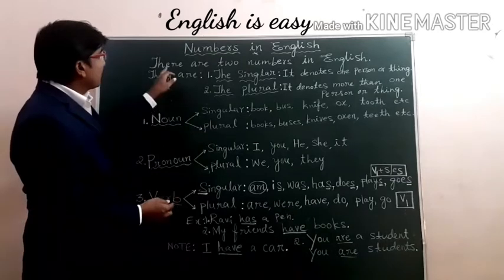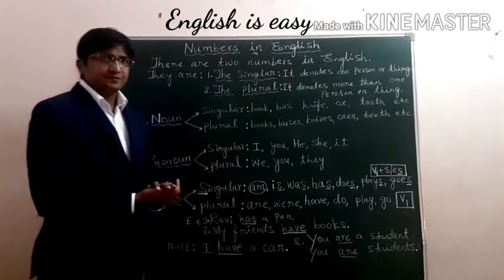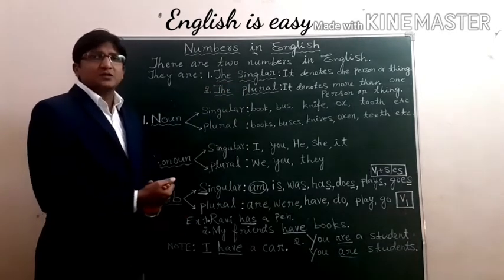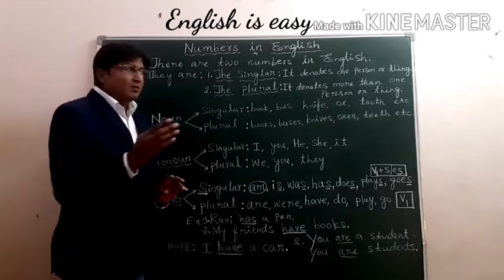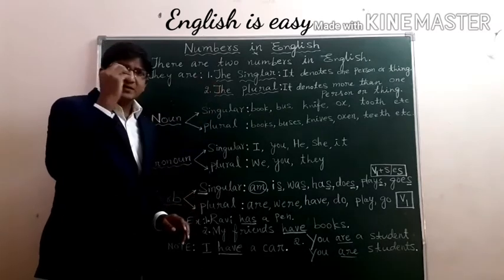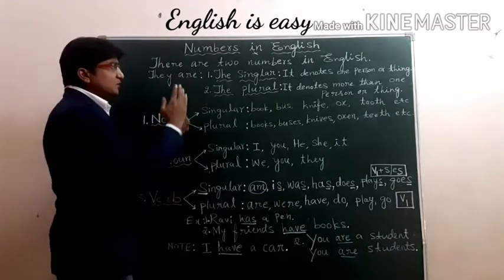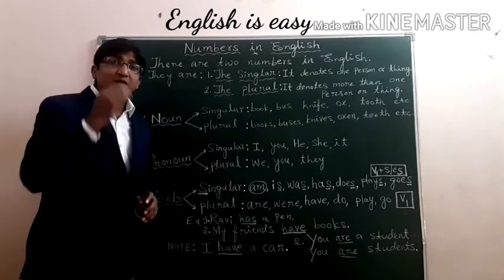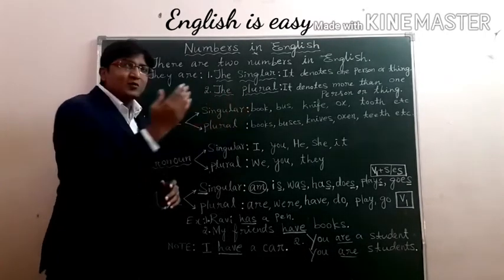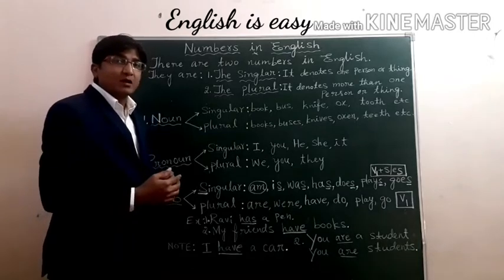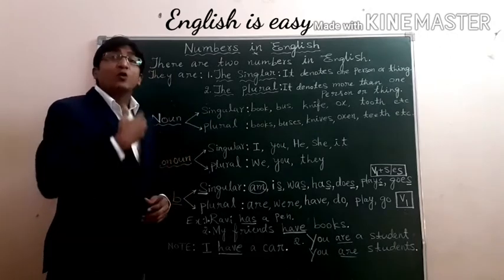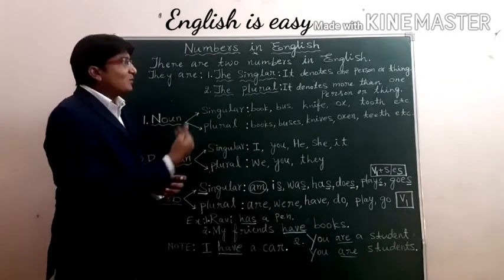So here I have written, there are two numbers in English. They are the singular and the plural. We have numbers in English. And I want everyone, while I am going to teach, just pay attention. I want everyone to be smart. I want everyone to win — and my meaning of win is, you need to understand, you need to know, you need to grasp what I am going to teach.